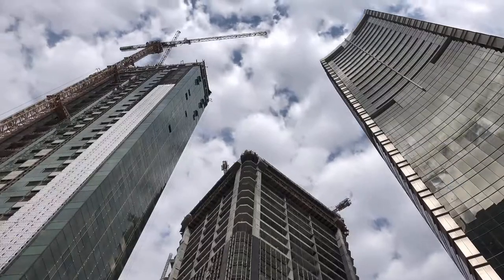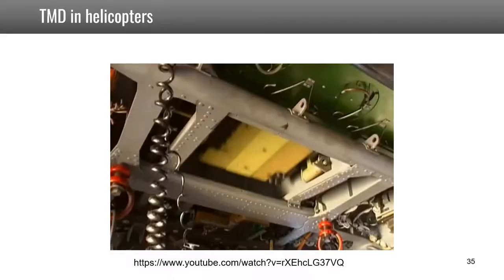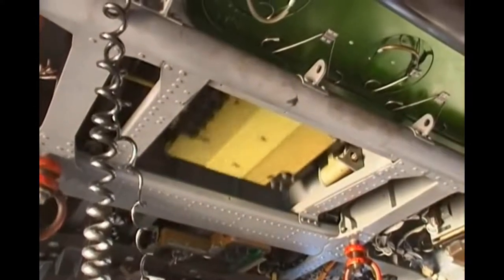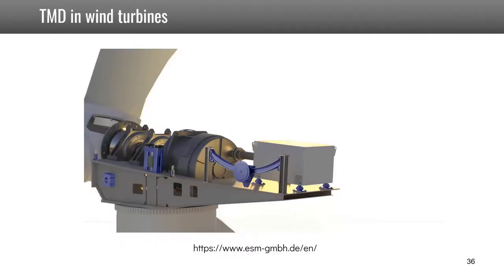This video shows the active tuned mass damper in the floor of a helicopter. This last picture illustrates the use of a TMD in wind turbines. In this case, this is the tuned mass damper which acts like a pendulum and is intended to damp the vibration in the horizontal direction.